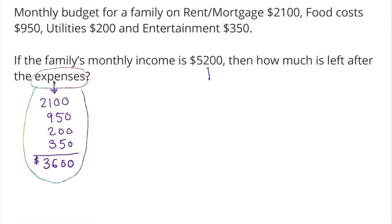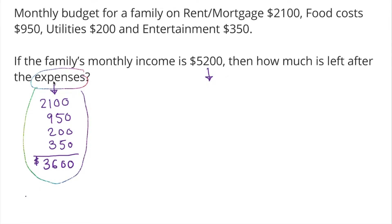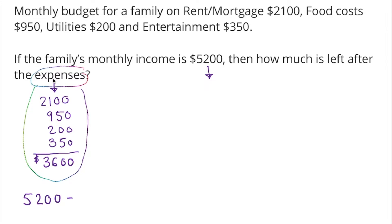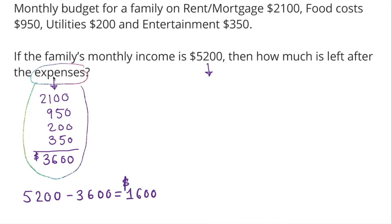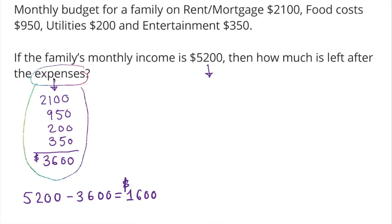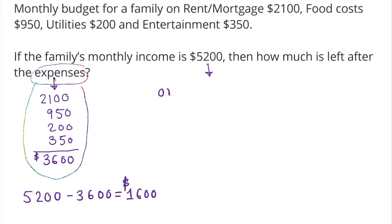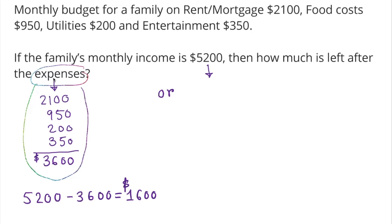The total income is $5200, so we do 5200 minus 3600, which gives us $1600. That is our answer — that much is left over after all the expenses. Or we can do it a different way.